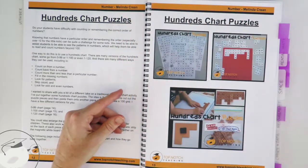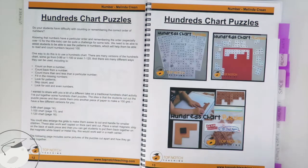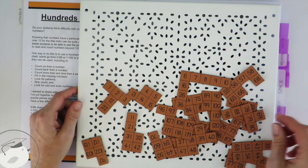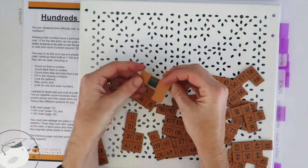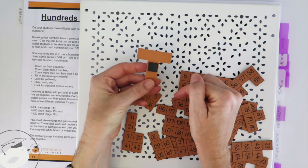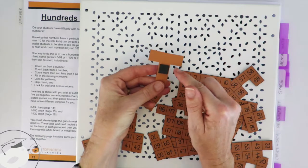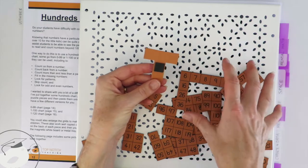But what I like to do, and this is great for if you've got math rotations or stations or something like that, is I like to actually put on the back of each of the bits once they're cut apart little magnetic strips.